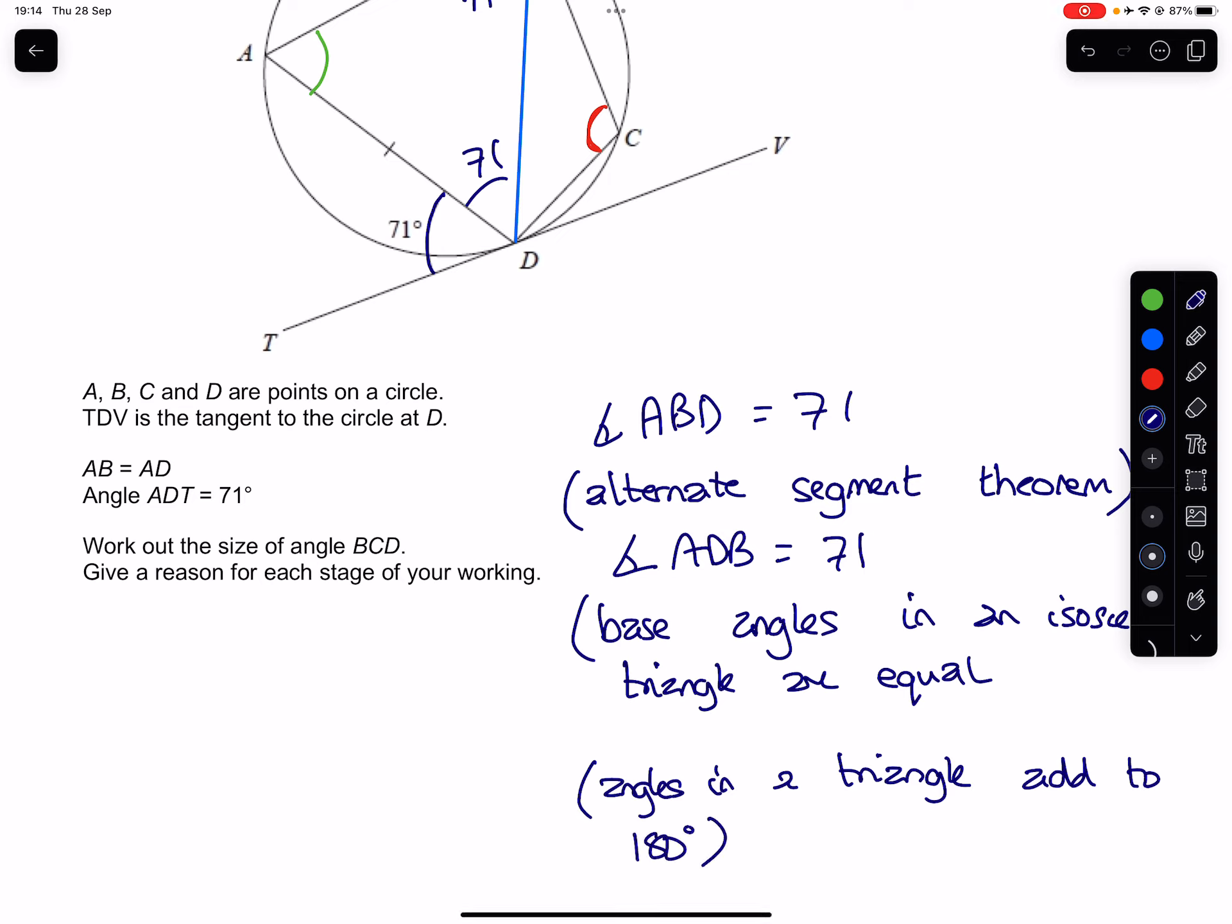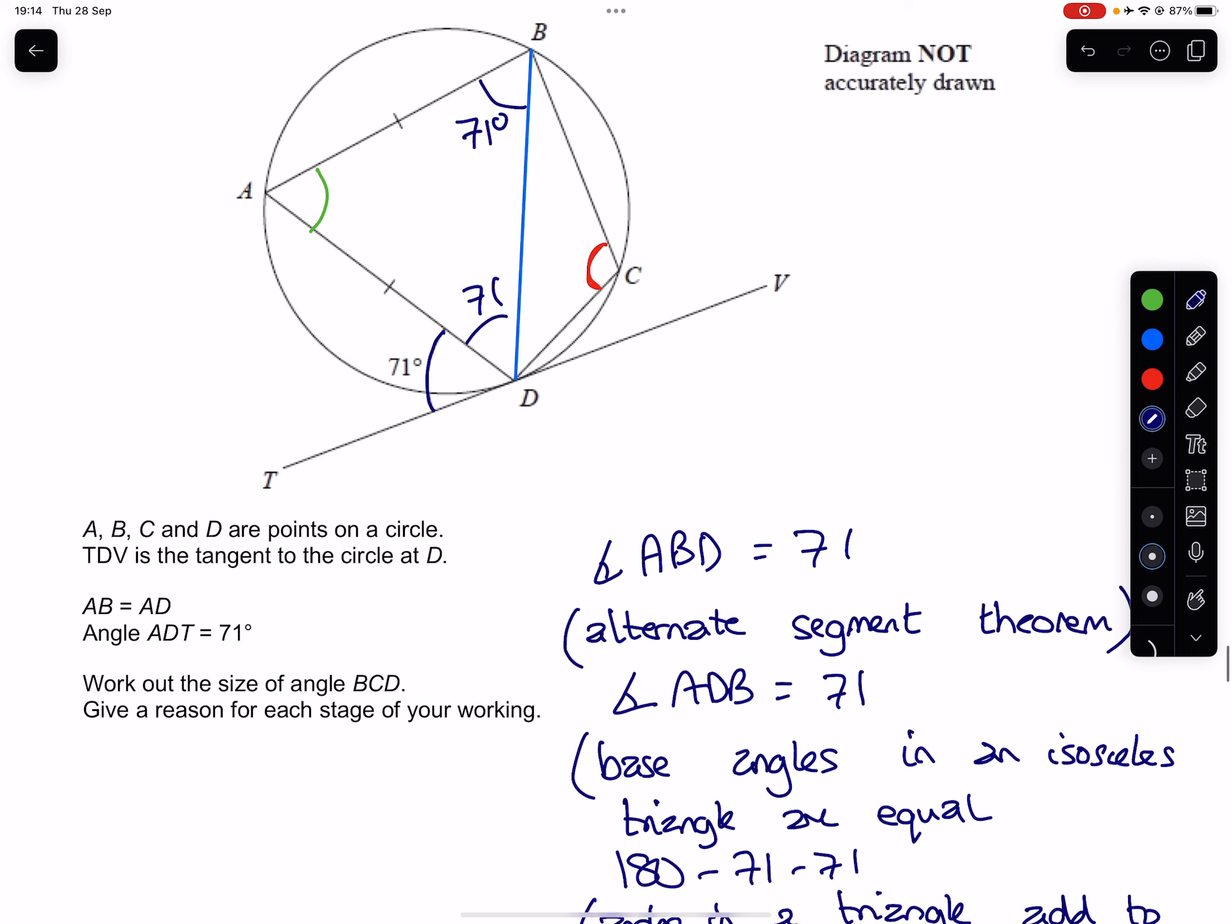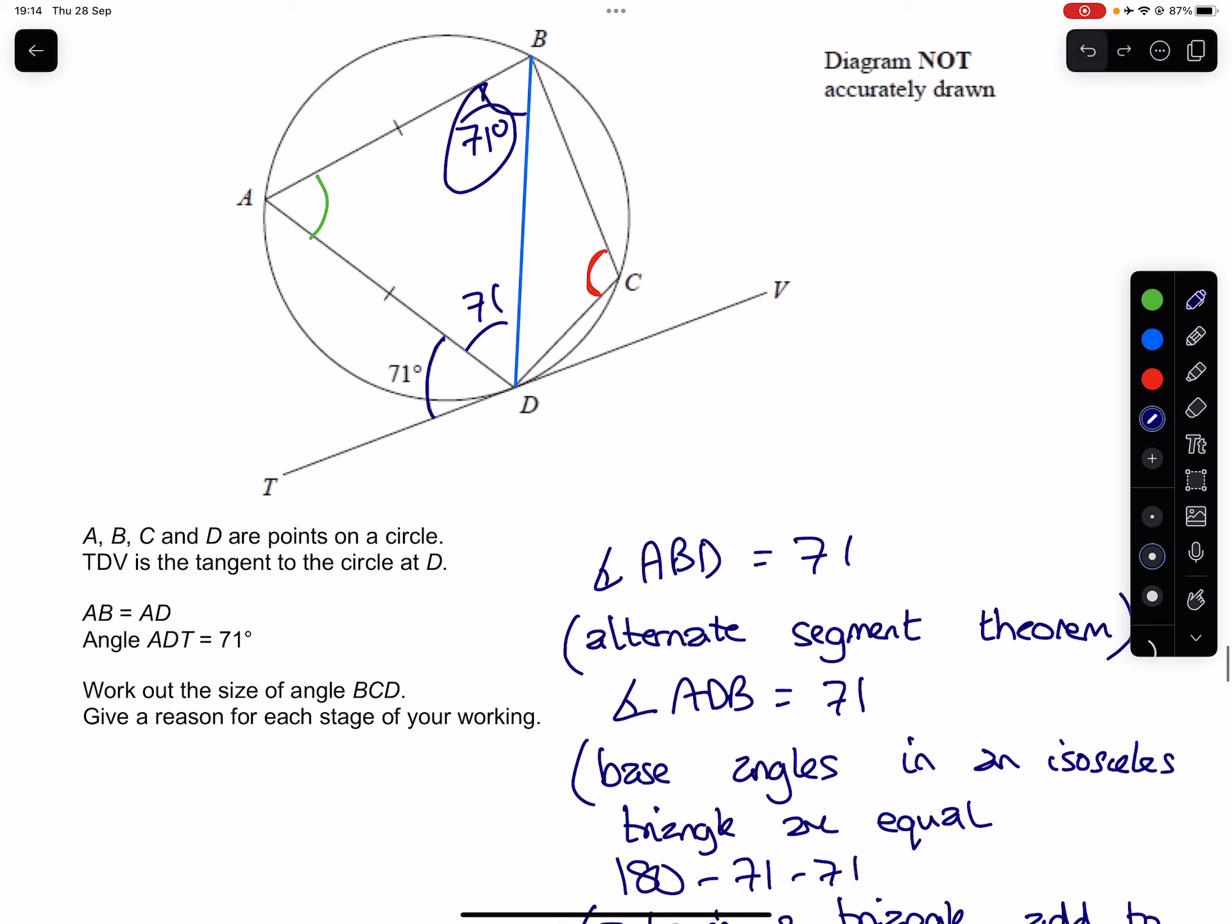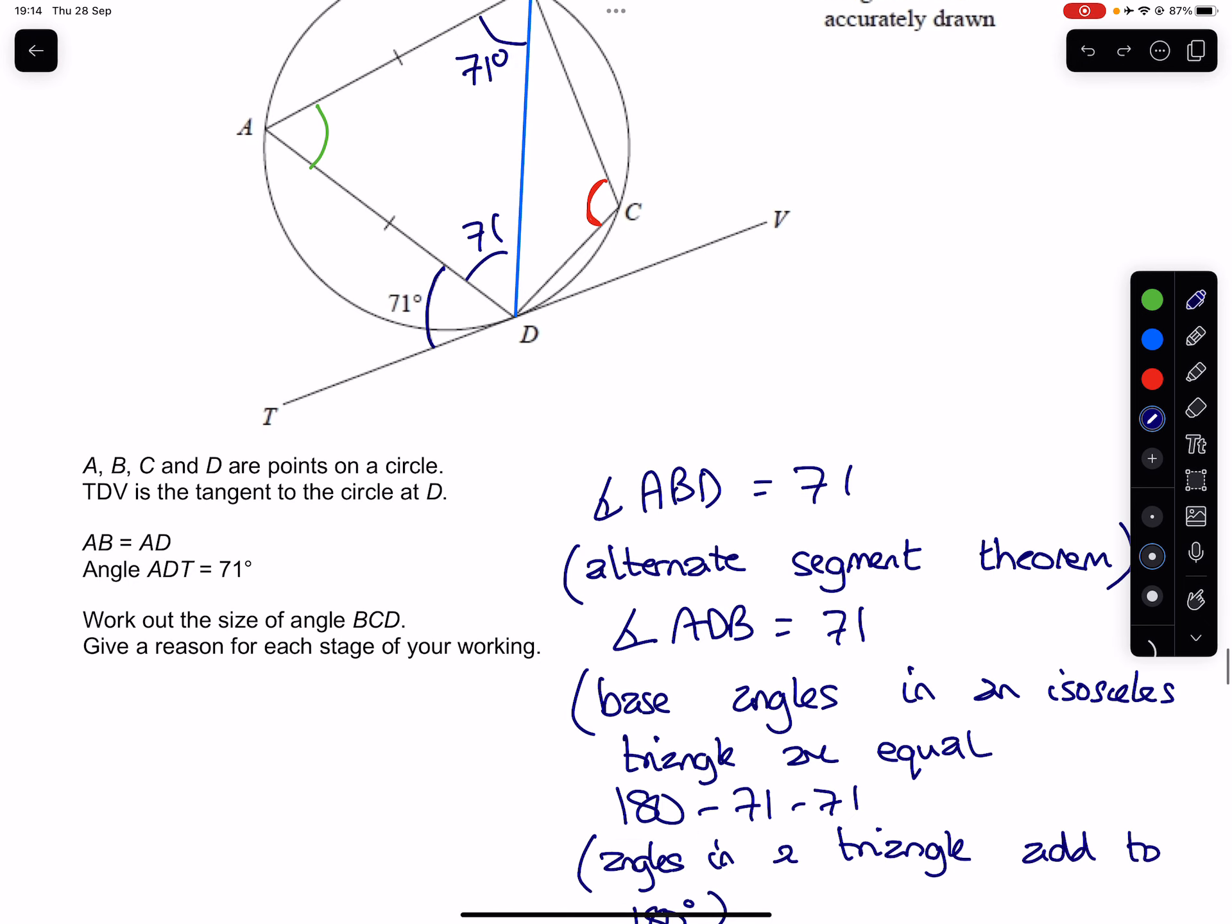So we would have 180 take away the 71 and take away the other 71 for these here, or you can add them together first before subtracting. You're going to end up with 38 degrees for that angle in green, which I'll just write in green here: 38 degrees.